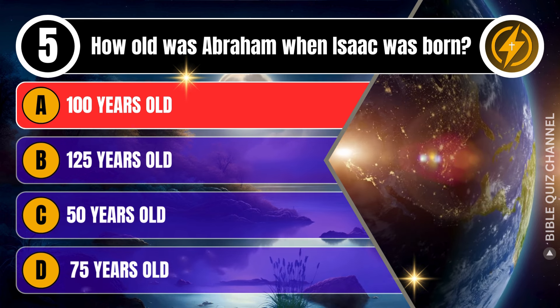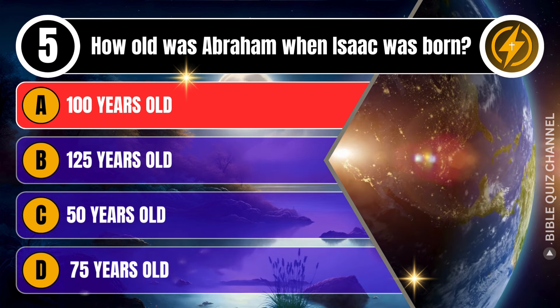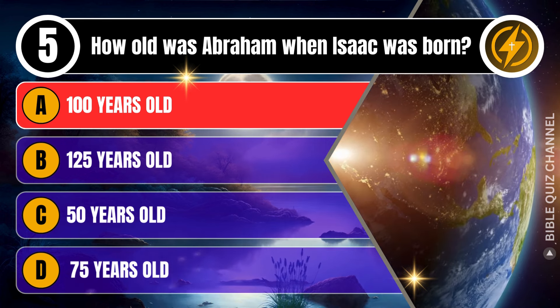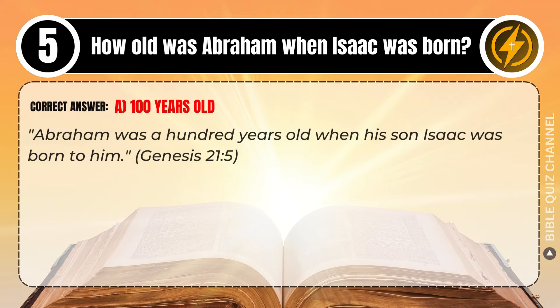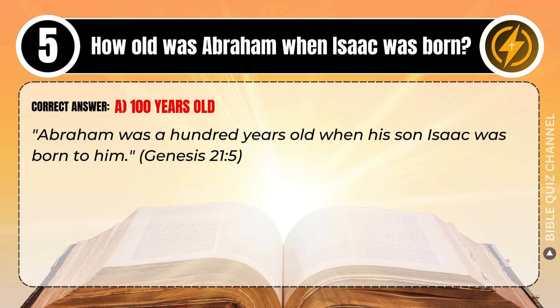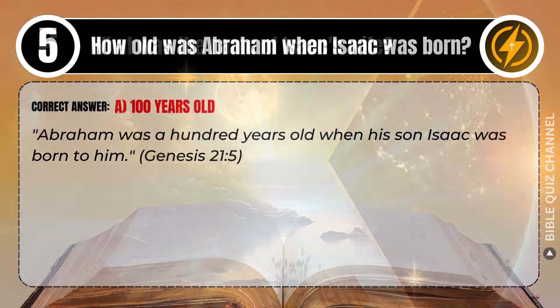Correct answer: A. 100 years old. Explaining the Bible — Abraham was 100 years old when his son Isaac was born to him. Genesis, chapter 21, verse 5.